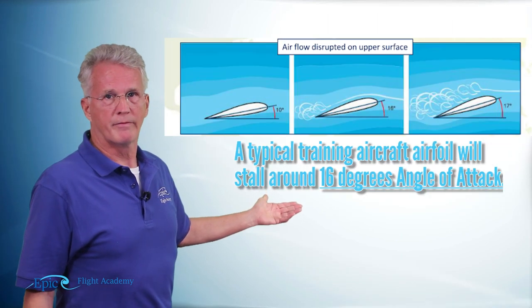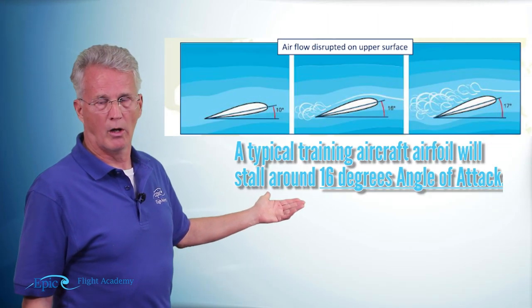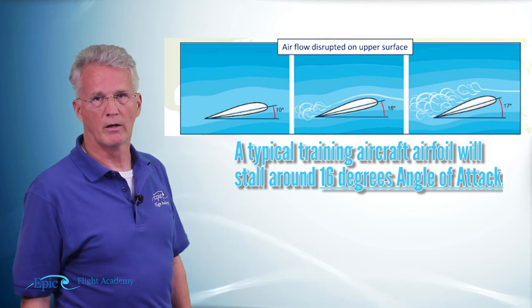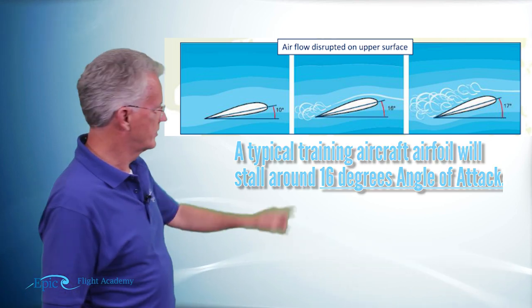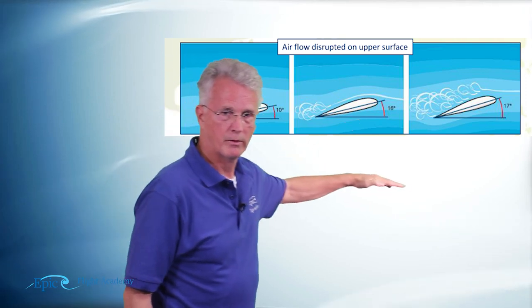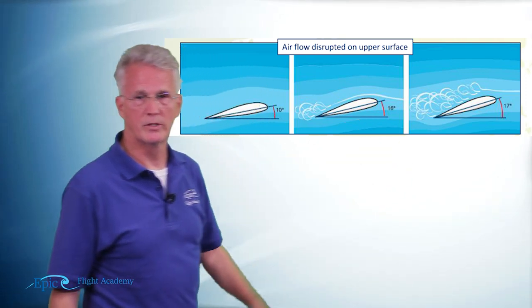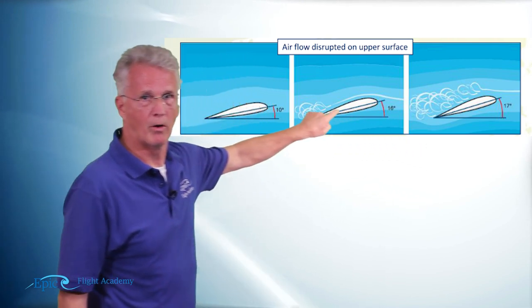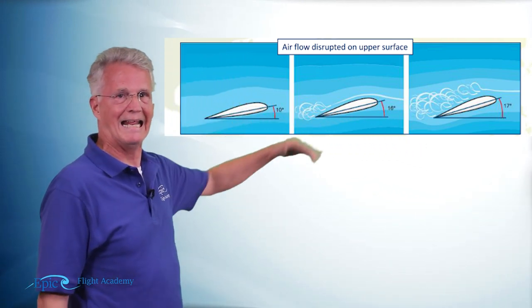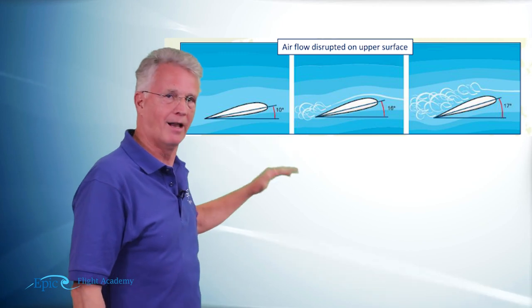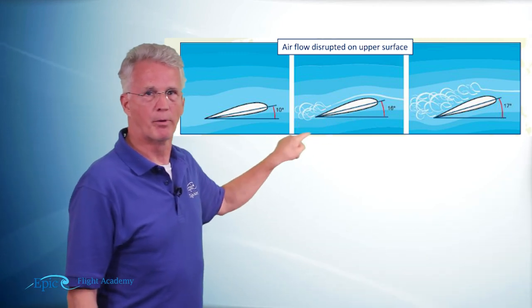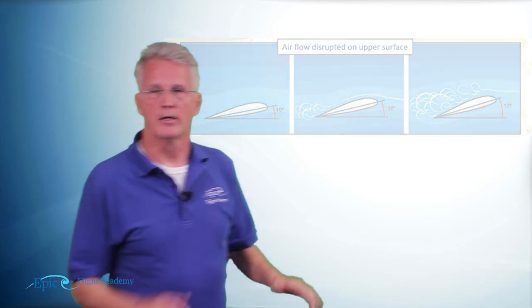Now you can see in this diagram a typical training aircraft airfoil stalls around 16 degrees angle of attack. You see that right here, the cord line, the relative wind, 16 degrees. The airflow is trying to come over the top of the wing and is not able to smoothly follow the top of the wing. It starts to burble.